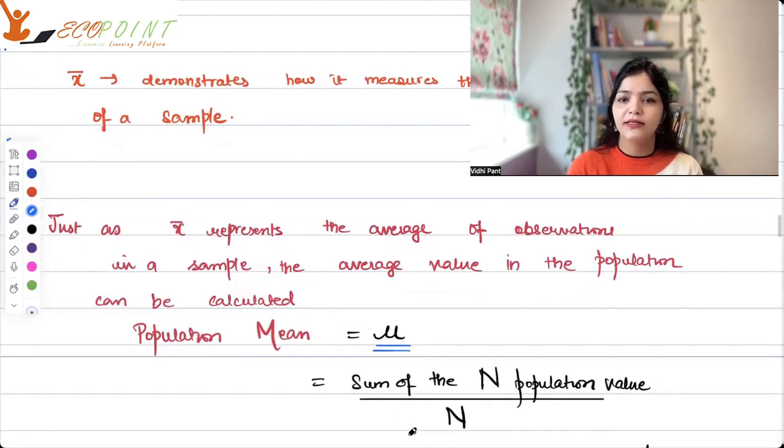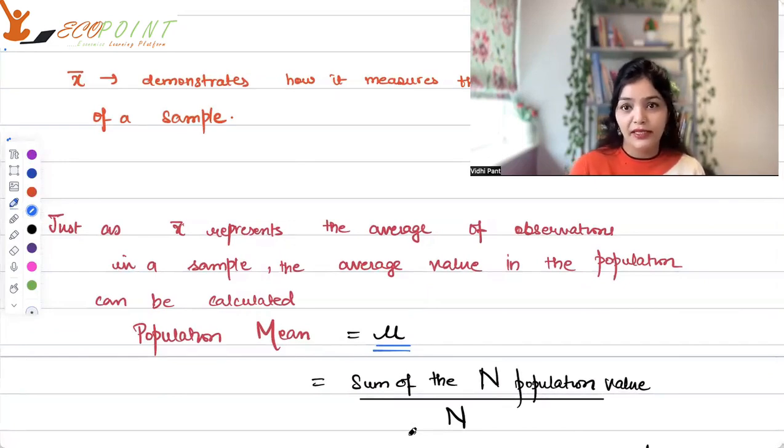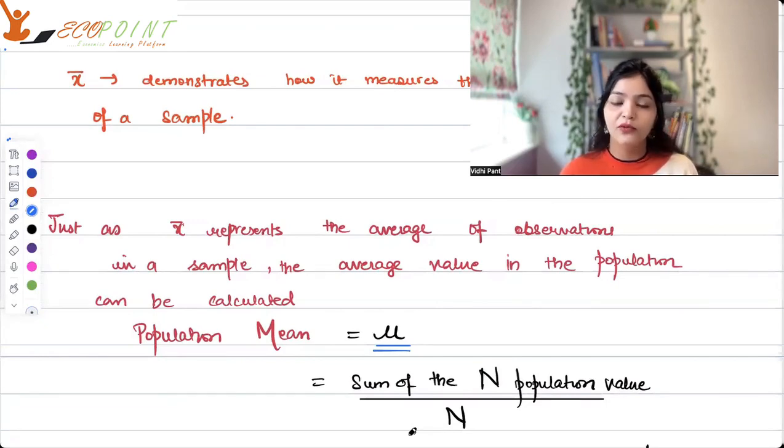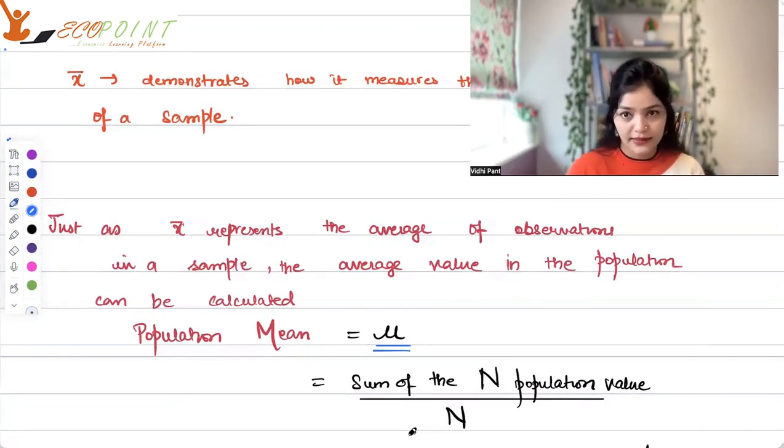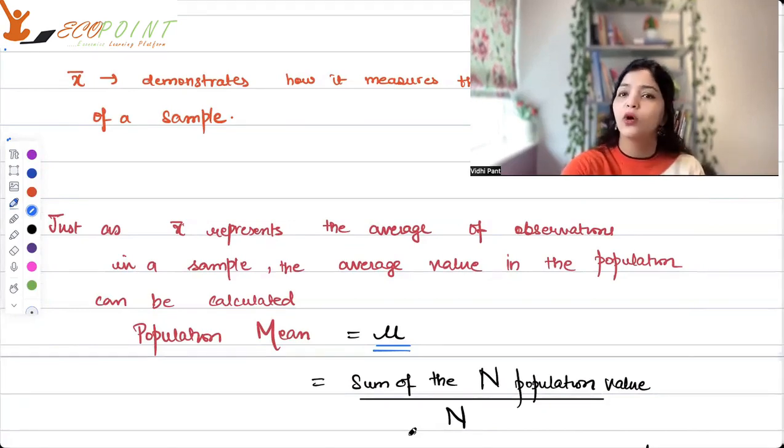So what will it be? Again, it will be the sum of capital N, number of items, number of observations in population, capital N in general. Sum of capital N population values upon N. That is capital N again. That is the total number of observations that you have. Concept, same.